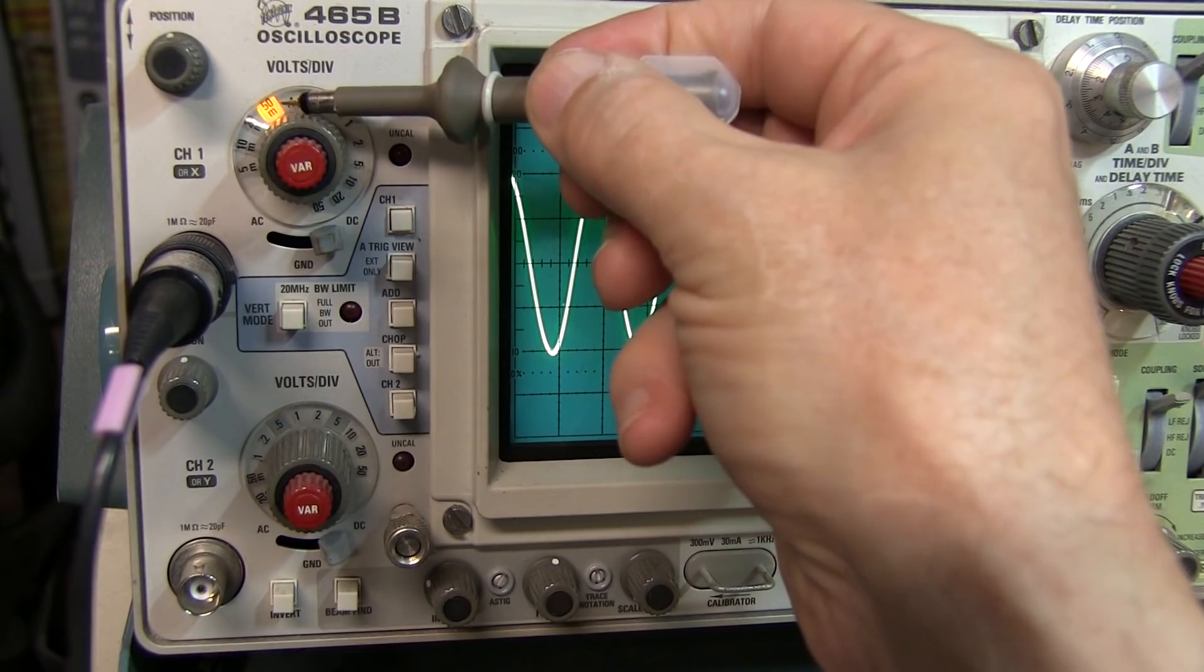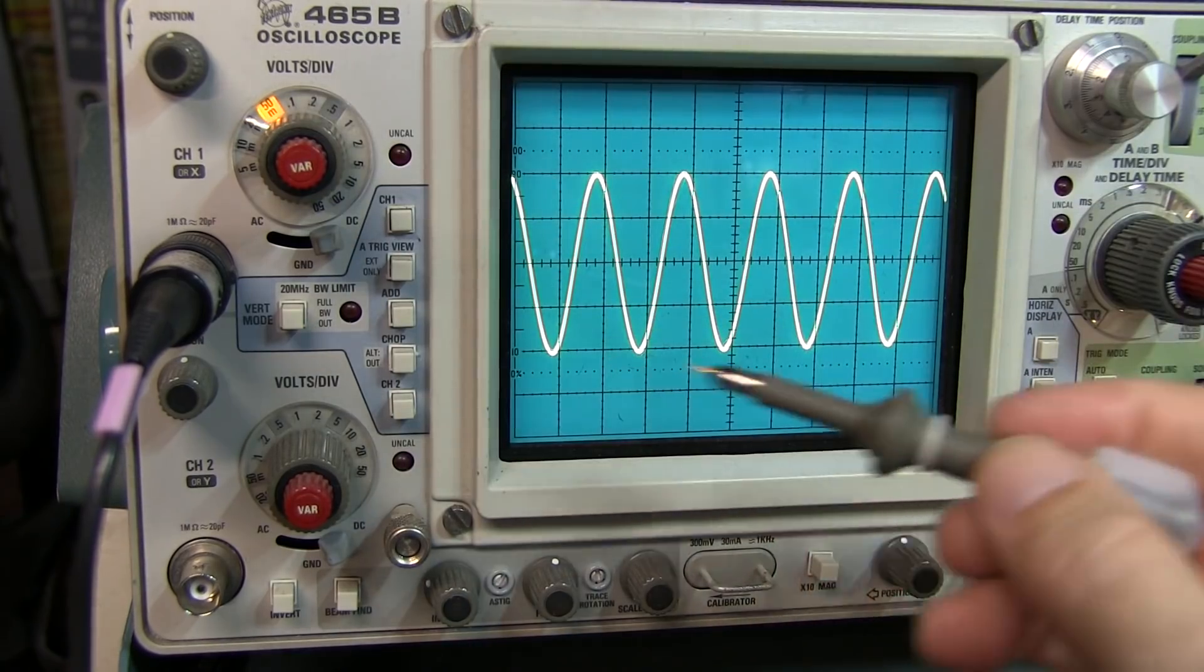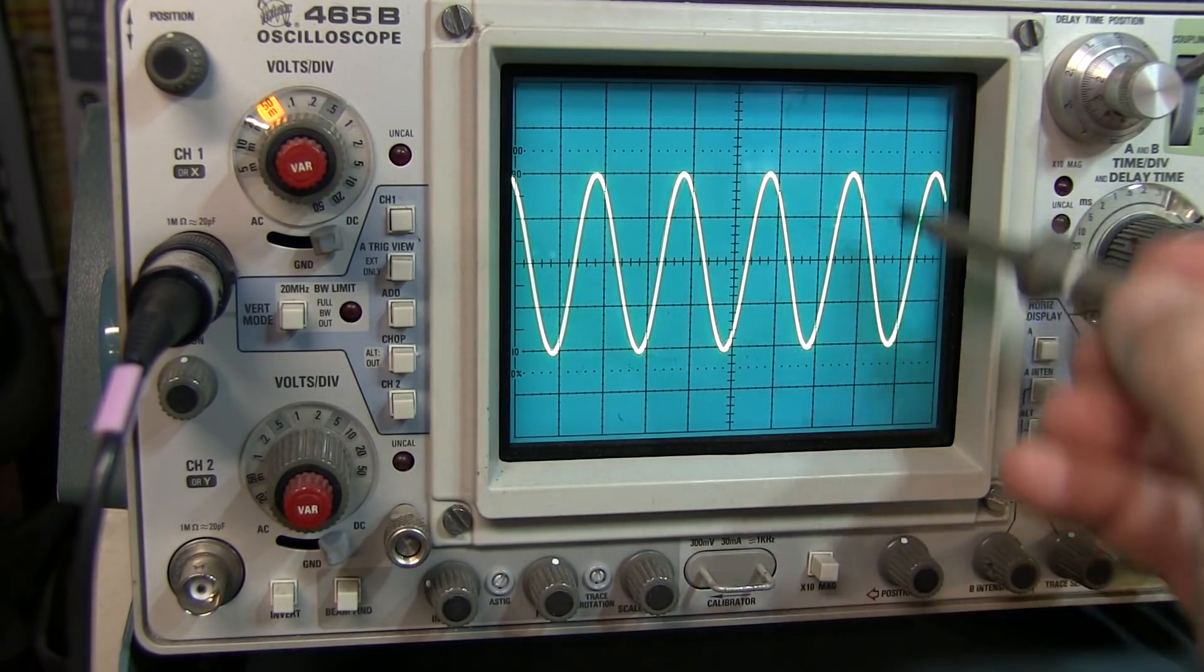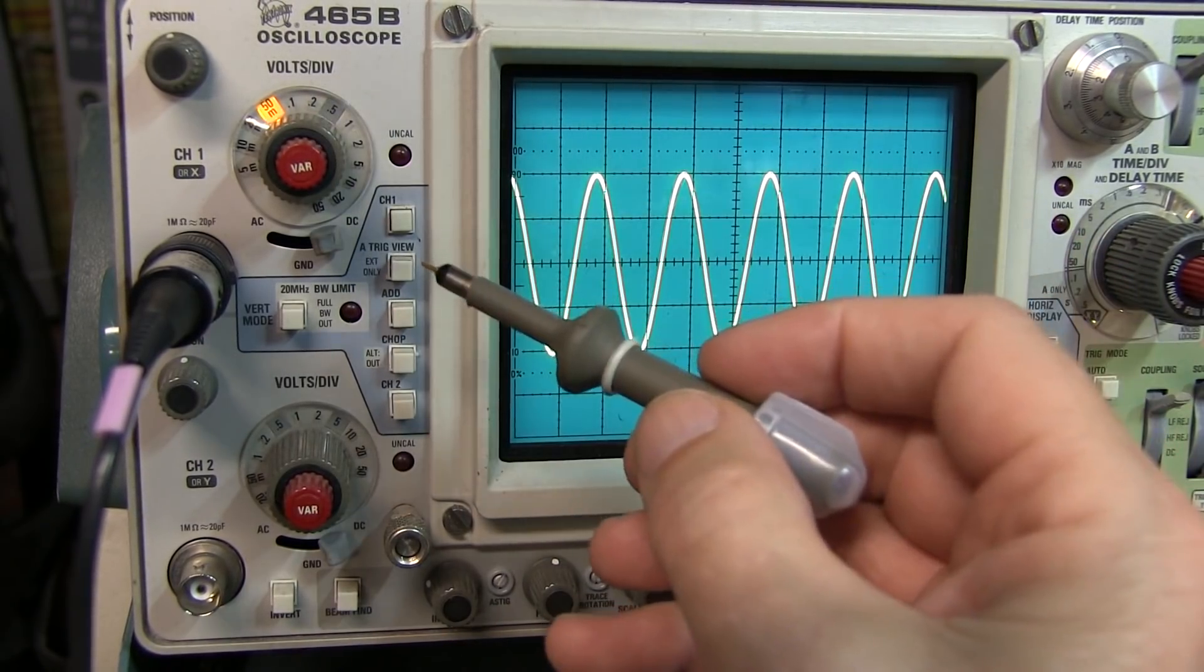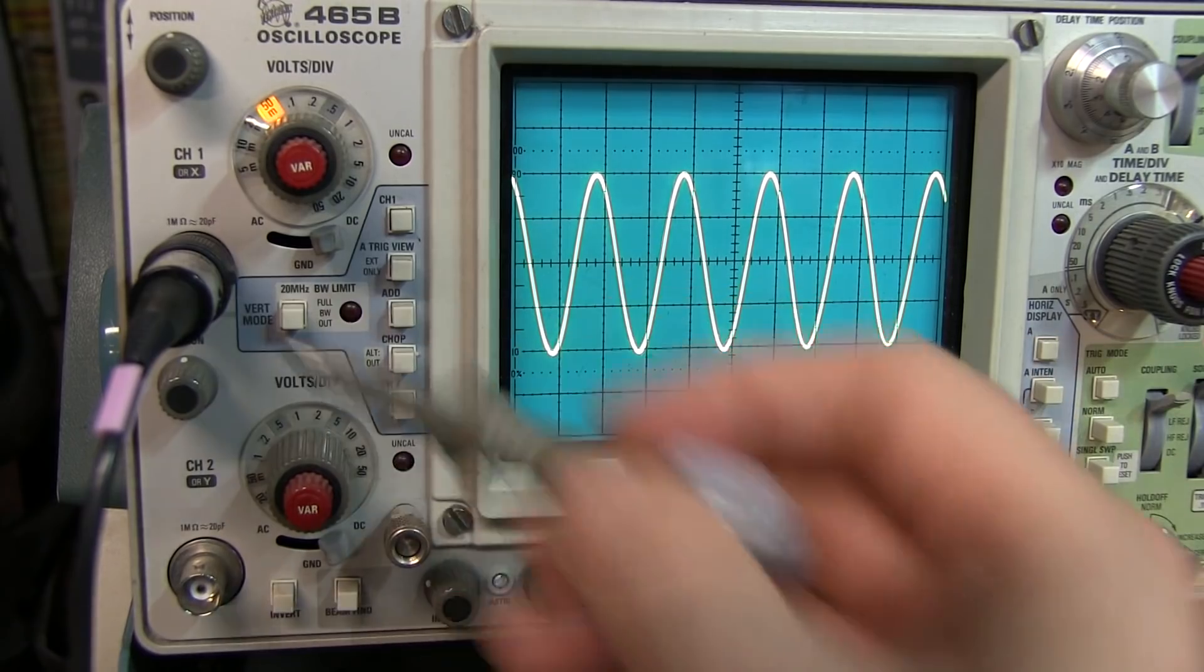But if I look at my vertical scale setting, that's 50 millivolts per division, so I'm looking at 200 millivolts peak to peak. I'm off by a factor of 10. And that's because the scope is not accounting for the factor of 10x of the probe.